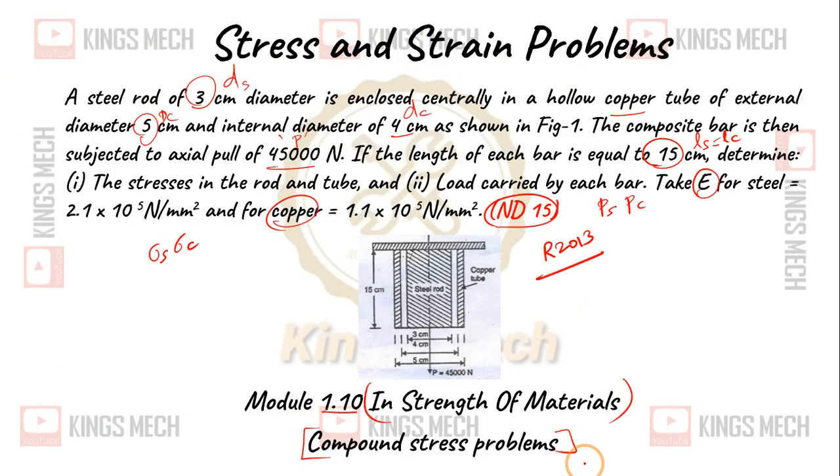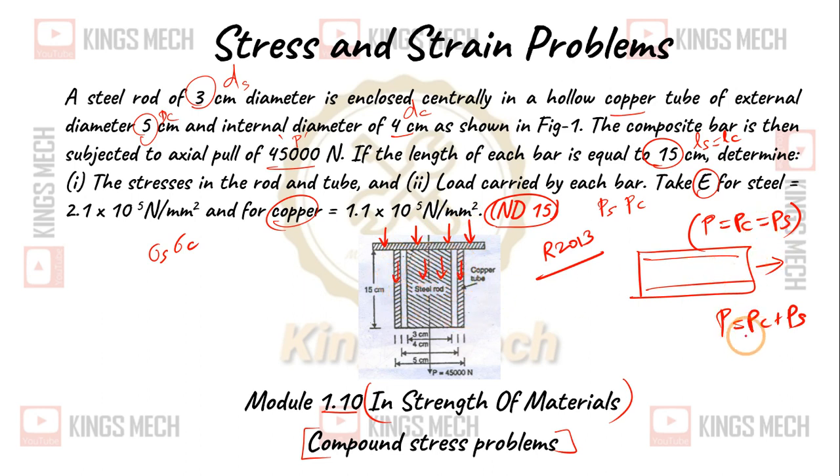In the compound stress problem, one common bar enclosed, capital P which is equal to PC which is equal to PS. Capital P is equal to PC plus PS. Actually in the tube 15 cm the load is applied on it so the load is equally distributed, PC plus PS.